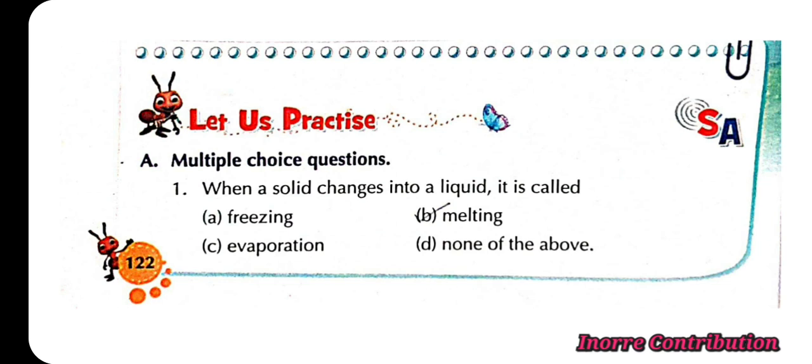Let us practice. Multiple choice questions. First one, when a solid changes into a liquid, it is called option B, melting.